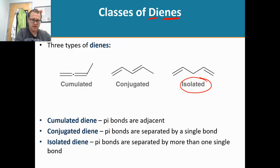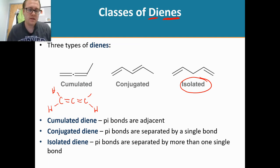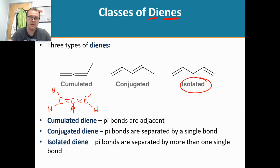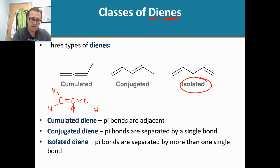Let me draw out the accumulated diene so we can get a better understanding of what it looks like. The central carbon is flanked by double bonds on each side, so that central carbon has four bonds and it is stable. Drawing it accurately, we have a wedge for the methyl group and a hydrogen.